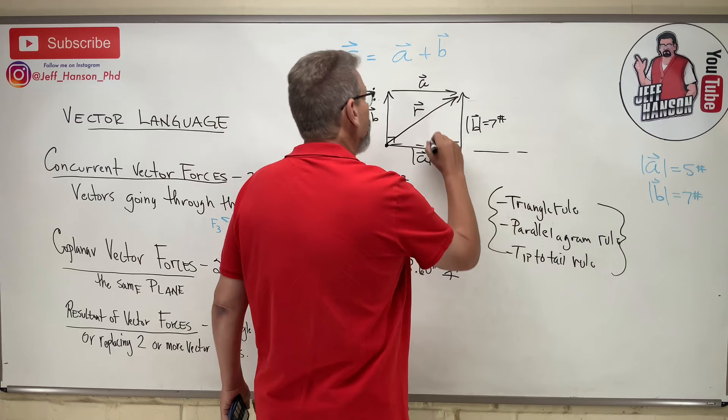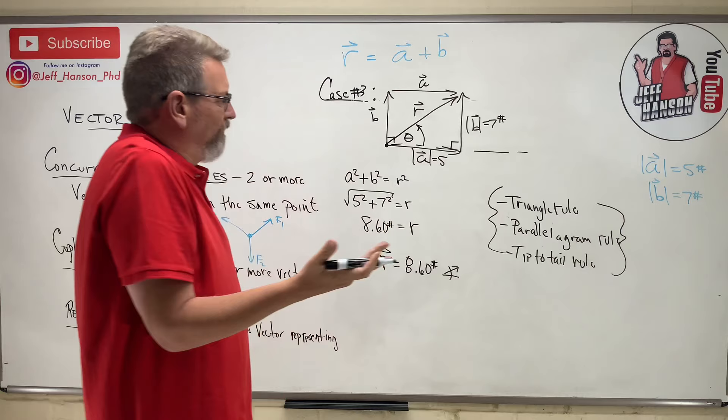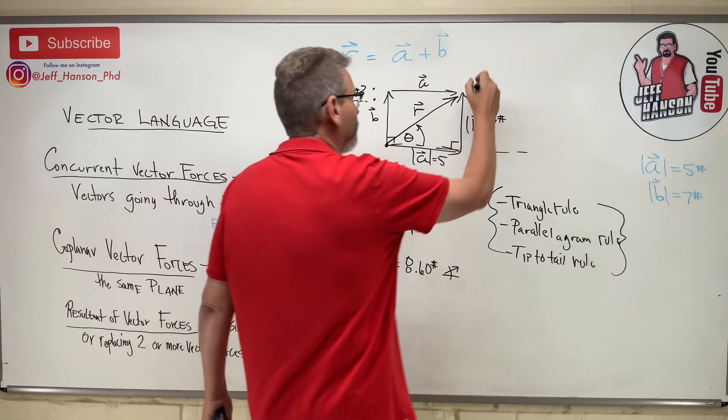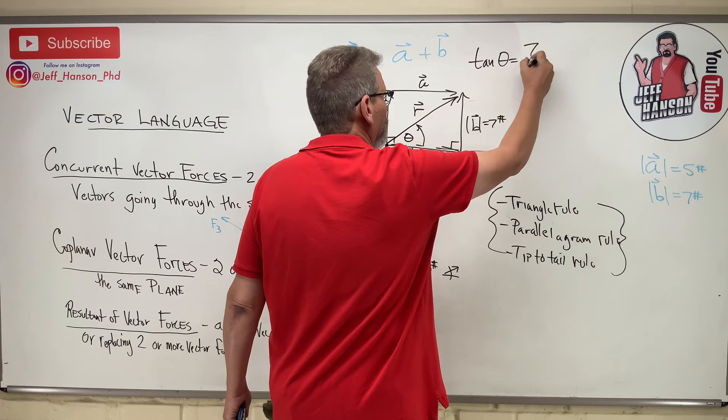And the direction is, here's horizontal, and the direction is this angle right here. We'll call it theta. So, how do I find angle theta? Oh, yeah. Soh Cah Toa, right? Let's see. What do I know? I know the opposite side, and I know the adjacent side. Ooh, how about tangent? Tan of theta is equal to opposite, 7, divided by adjacent, 5.